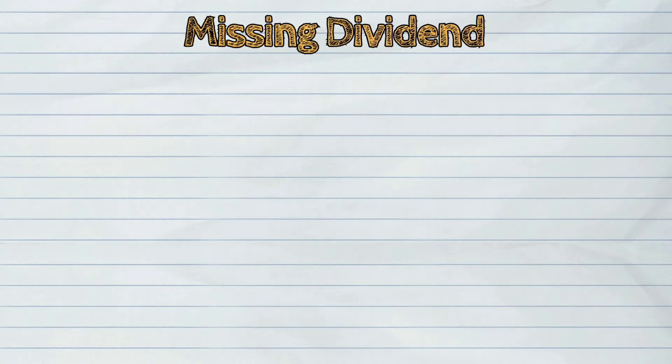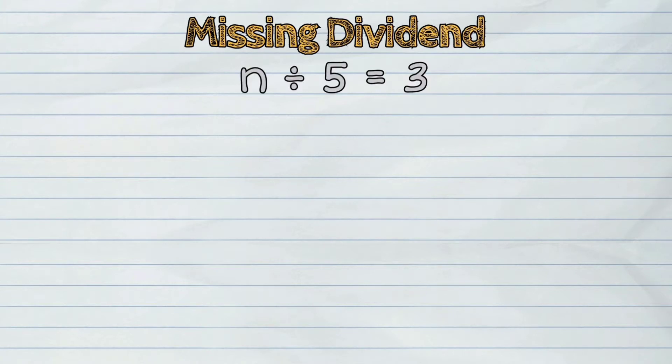Let us first learn what to do if the dividend in an equation is missing. In the equation n divided by 5 equals 3, we are to find the value of n such that if we divide it by 5, the answer is 3.